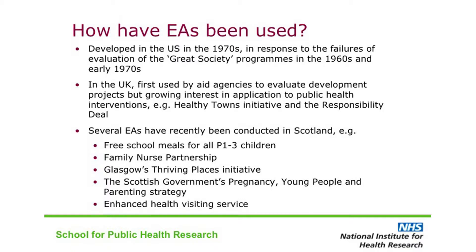Evaluability Assessment was developed in the US in the 1970s in response to the failures of the evaluation of the Great Society programs. There was very substantial investment in evaluating these programs, but many of the evaluations showed no effect and this led to a backlash against public spending on programs of this kind. When the evaluation studies themselves were reviewed, it became evident that many of the programs had such unclear goals or were so badly implemented that evaluation was uninformative. EA methods were developed both to improve the quality and usefulness of the evaluation studies and also to improve the quality and effectiveness of the programs being evaluated.